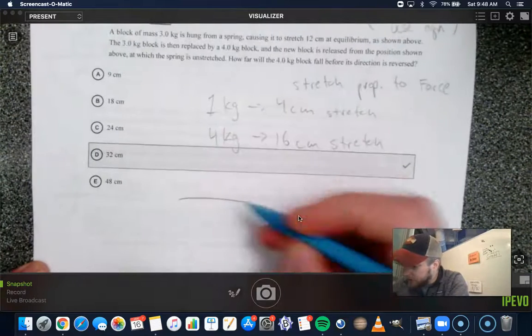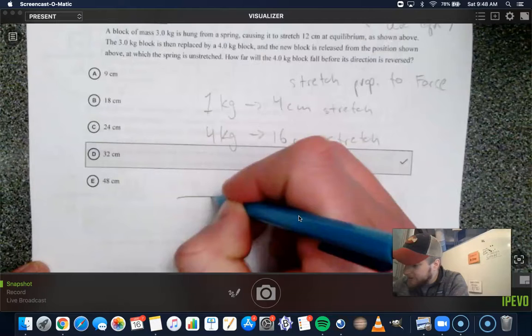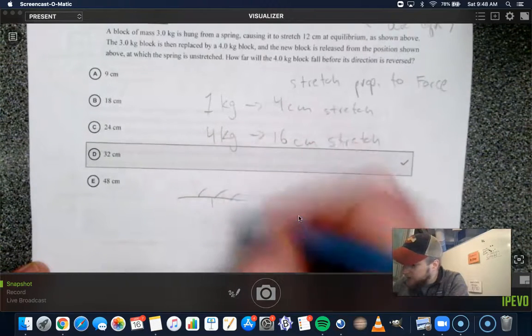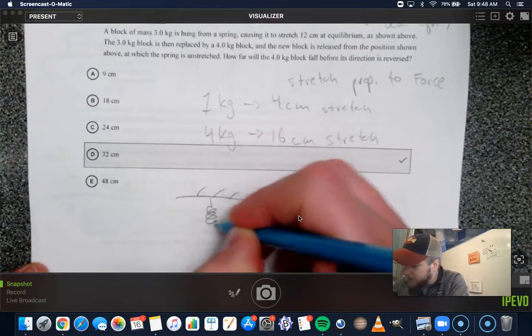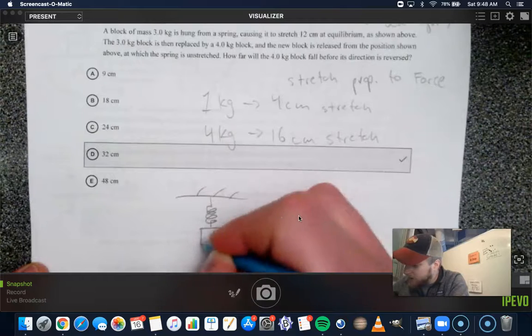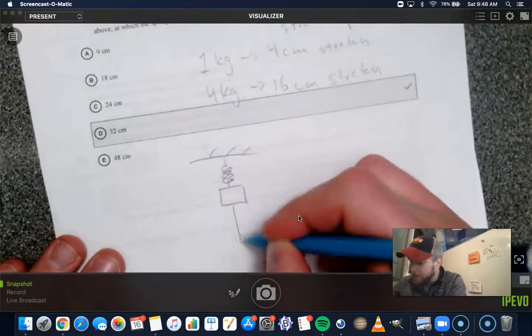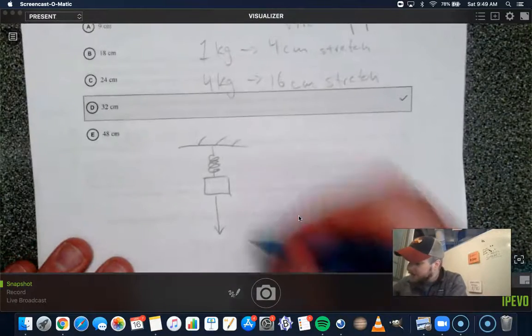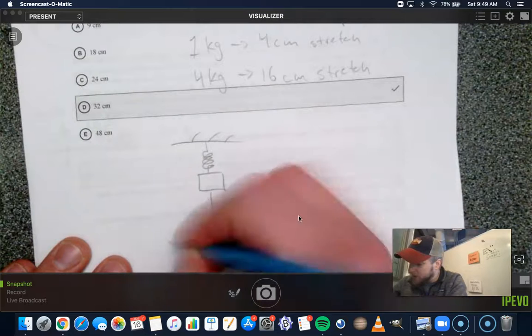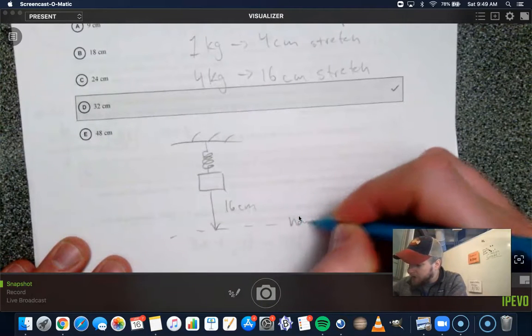So it's going to look like this. It is, let's say it's attached to the ceiling. It hangs, it's compressed like this, okay? And it's going to first drop down 16 centimeters. This is where it would hang normally.